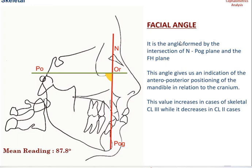Starting with the skeletal parameters, the first is the facial angle, formed by the intersection of the N-Pogonion plane and the FH plane. This angle gives an indication of the anterior-posterior position of the mandible in relation to the cranium. Since we are using Pogonion as reference, this value increases in Class III cases as Pogonion is placed forwards, and decreases in Class II cases as Pogonion is in a retrograde position.